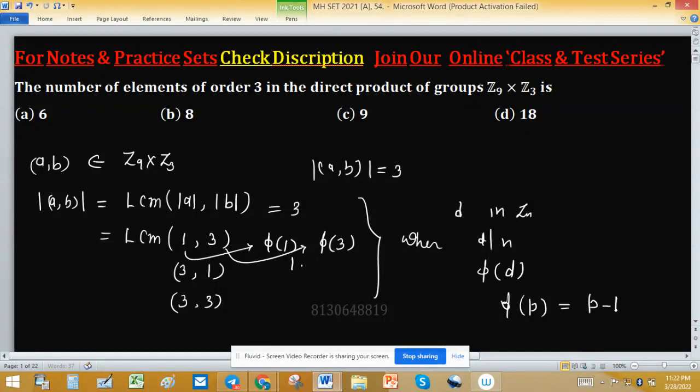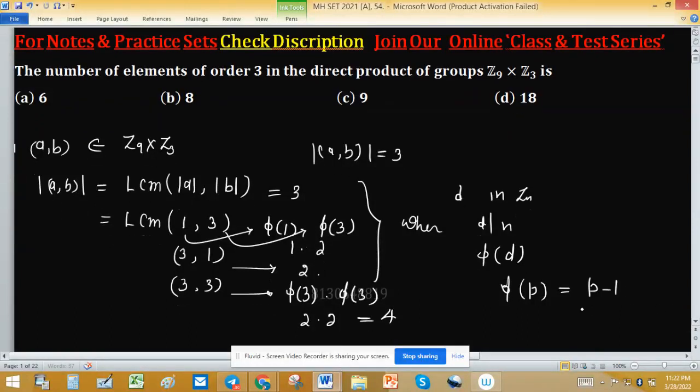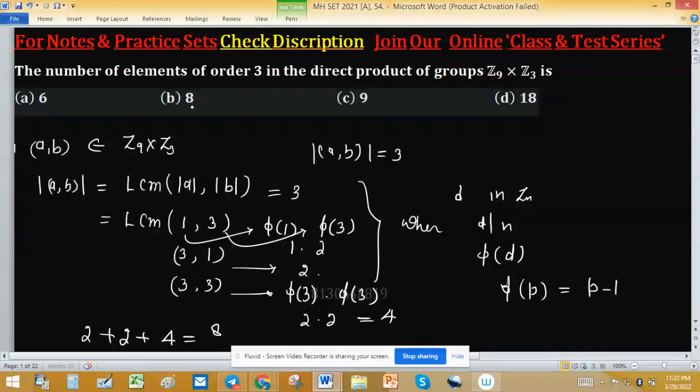In this case we have again two possibilities, and in this case φ(3) times φ(3), and the value of φ(3) is 2 times 2. Finally, in the last case we are getting four possibilities of elements of order 3. So how many elements? In the first case 2, from the second case we again obtain two elements, and from the last case we are getting four elements. So total elements will be 8, and this is given in option B, so option B is correct.